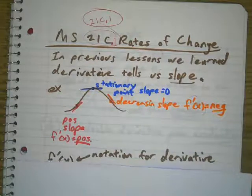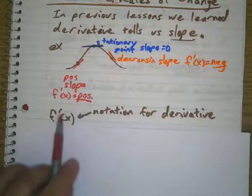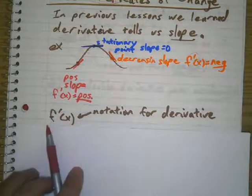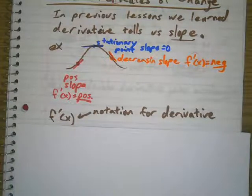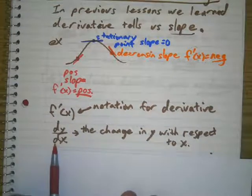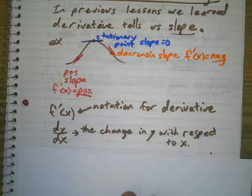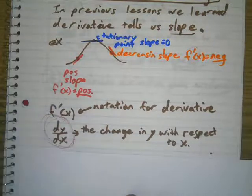So we've been using this notation here, f prime of x, and this means derivative. Another way of writing derivative is you might see it like this, dy/dx. This means the change of y with respect to x. You'll often see derivatives written in this way.